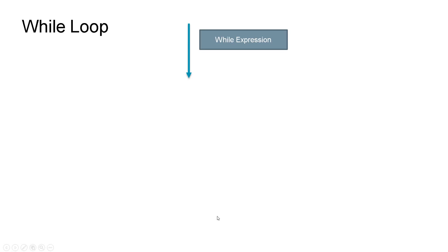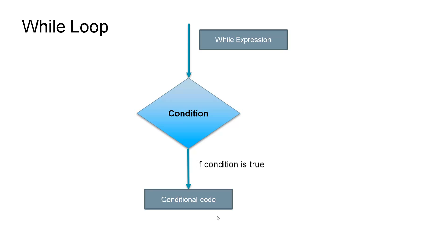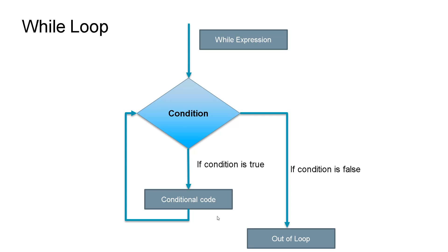While loops in Python are condition-based, as opposed to for loops. For loops run a certain number of iterations, while loops are based on a condition. You have a while expression with a condition — if the condition is true, it executes the conditional code, then checks the condition again. If true, it continues; if false, it exits the loop.